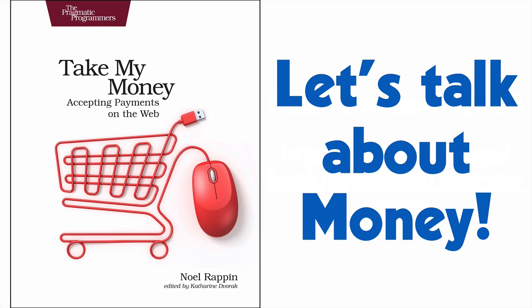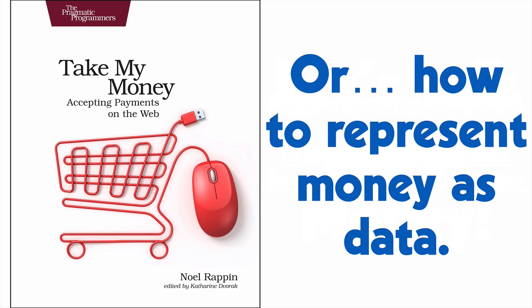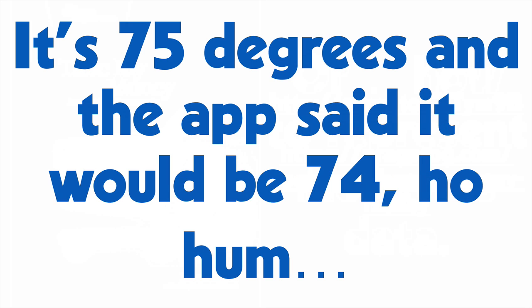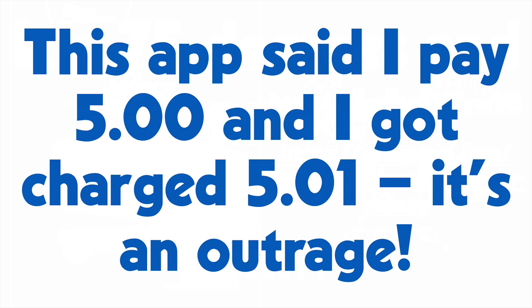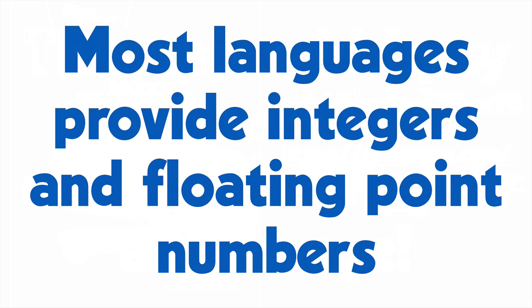Money is not like other data. If you're writing a weather app and your temperature data is off by a fraction of a degree, people are not likely to notice. But if your money data is off, people will notice. That precision makes it hard to deal with money accurately using the number types most commonly provided by programming languages. Let's take a look at why.